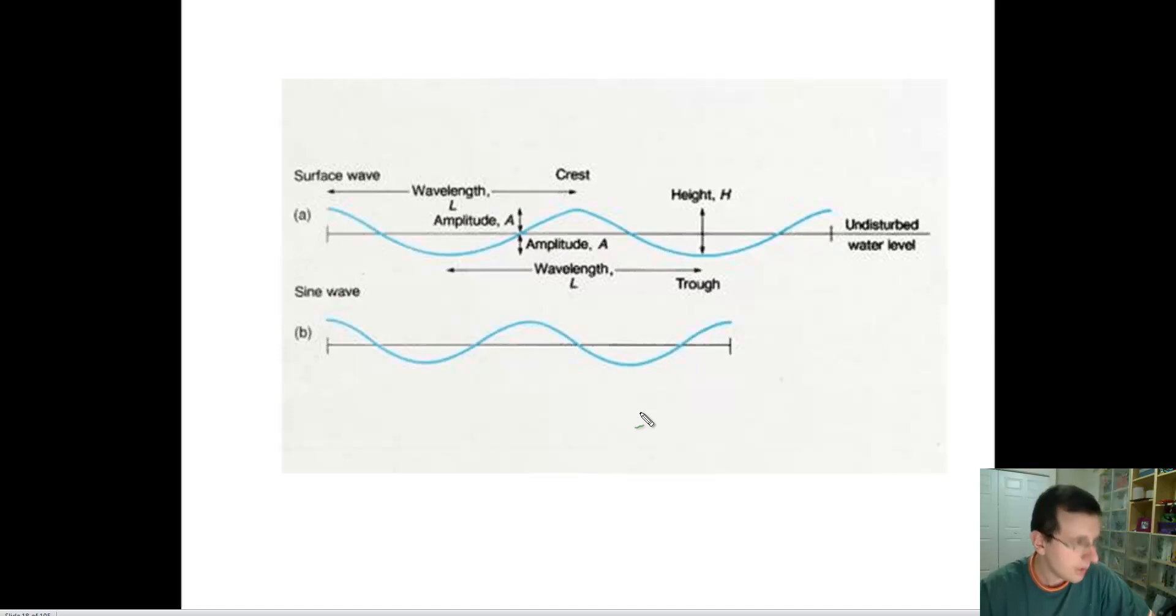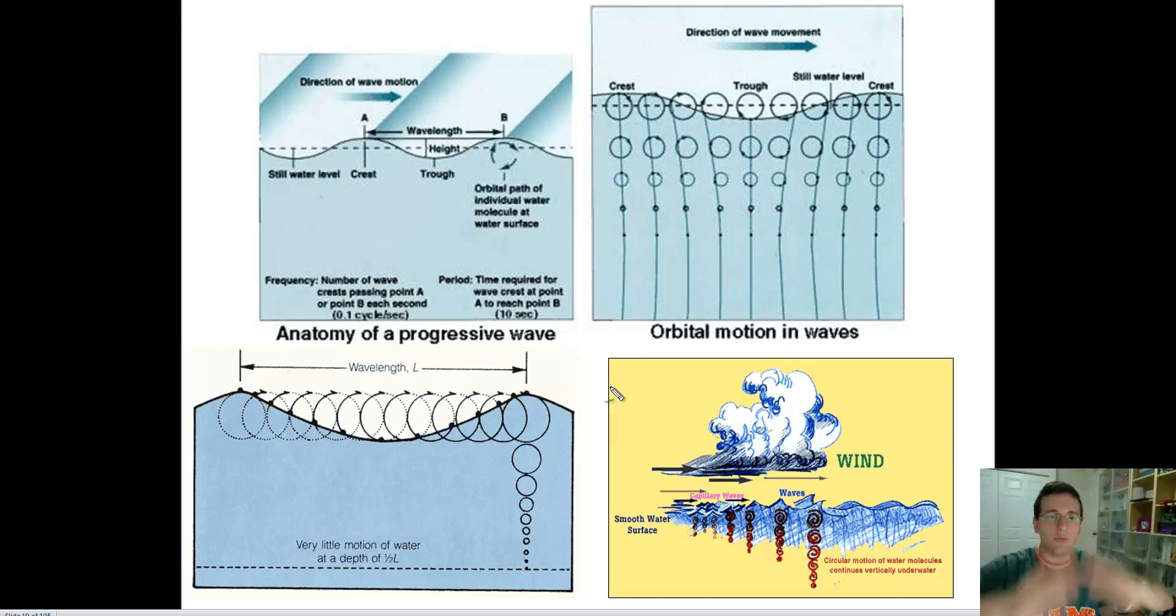Alright. Now, wave motion. When you think of waves, you think of the water moving up and down and up and down if you're in the open ocean. Near the beach, it seems like they're moving back and forth. So how is the water moving? Is it moving up and down or is it moving back and forth?